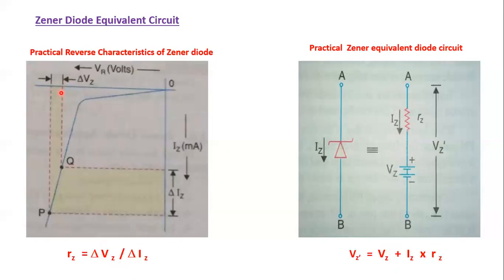The resistance rZ is very small because the change in voltage is small compared to the change in current, so ΔVZ/ΔIZ is small. rZ is typically on the order of a few ohms to a few hundred ohms. So the voltage across a Zener diode equals the breakdown voltage plus the product of Zener current and Zener resistance. I hope you understood — if you have any queries, please drop them in the comment box. Thank you.